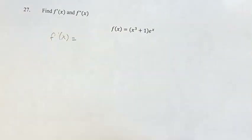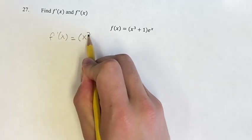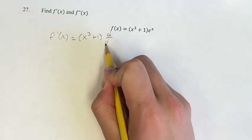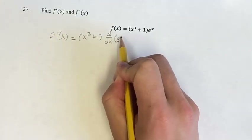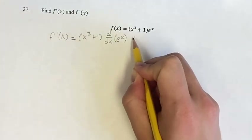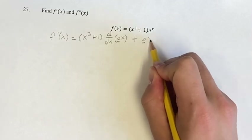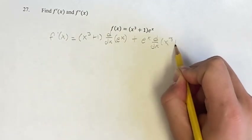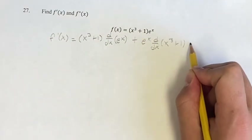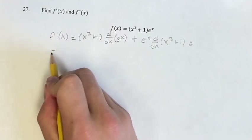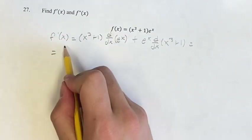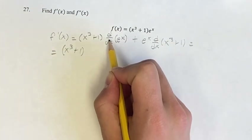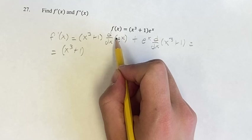So the derivative is going to be the first term times the derivative of the second term, plus the second term times the derivative of the first term. And this is going to work out to be x cubed plus 1 times the derivative of e to the x.